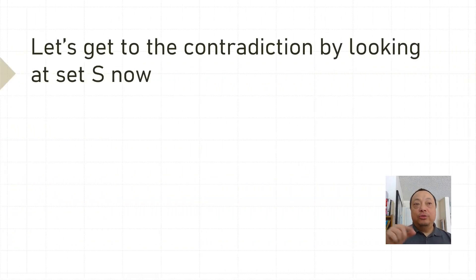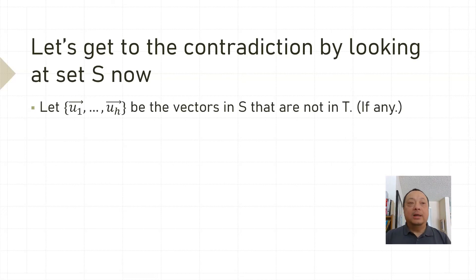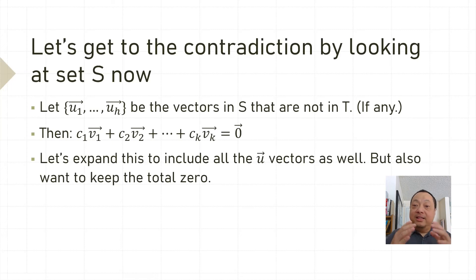Let's get to the contradiction by looking at the set S now. Let u1 up to uh be the vectors in S that are not in T if any. Then we're already told that c1*v1 up to ck*vk is equal to the 0 vector. Let's expand this expression to all of S by including all the u vectors as well.